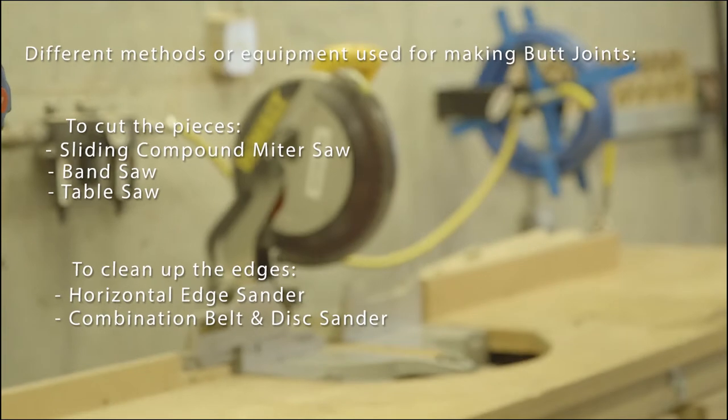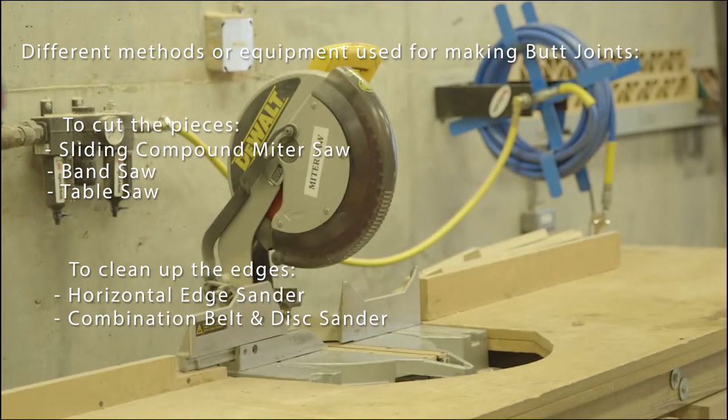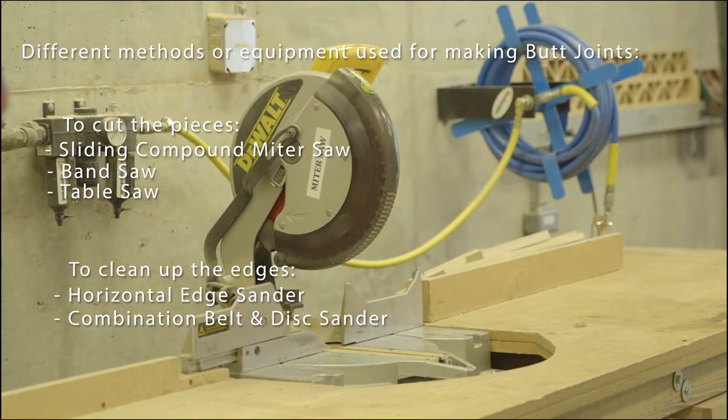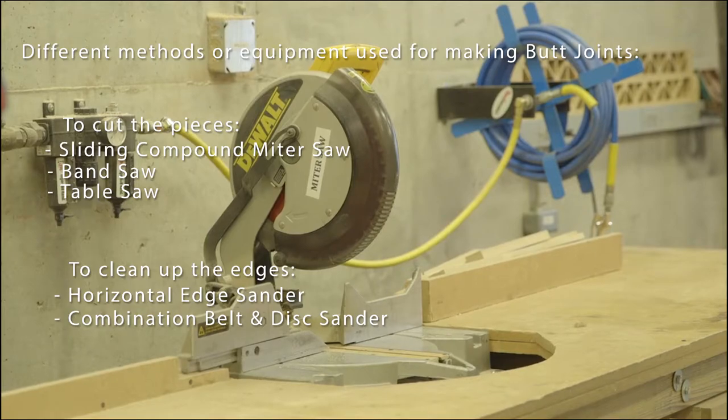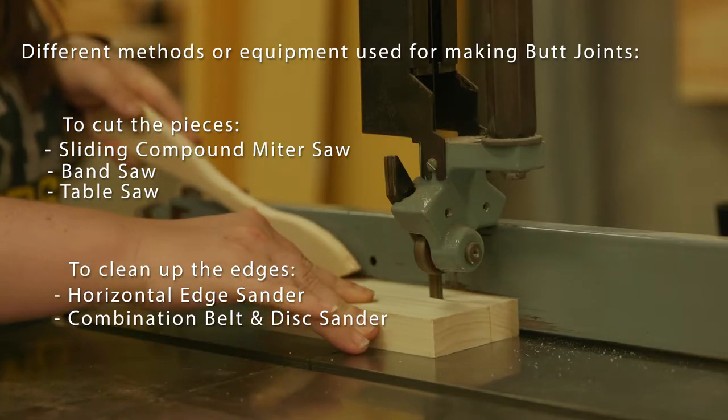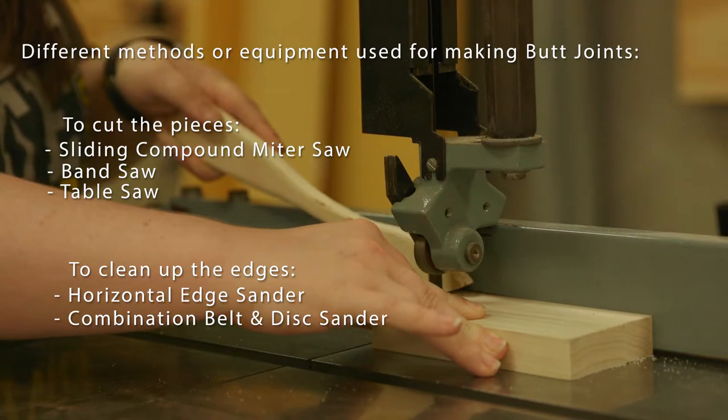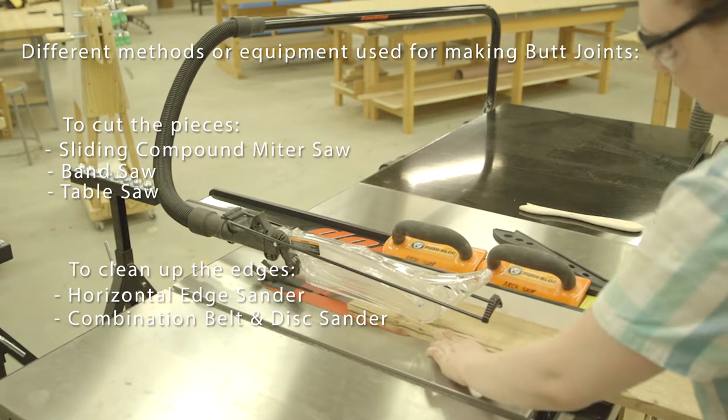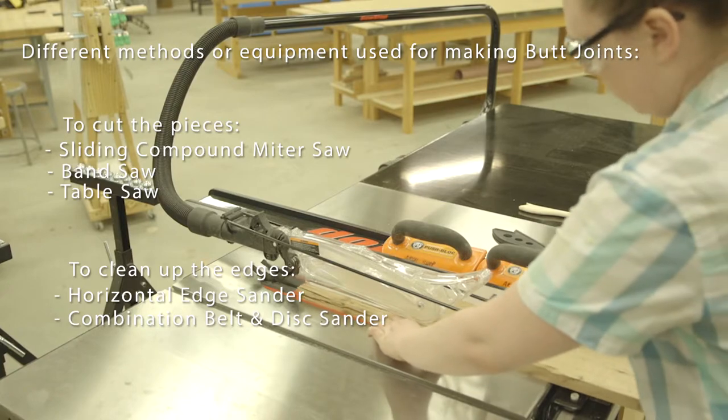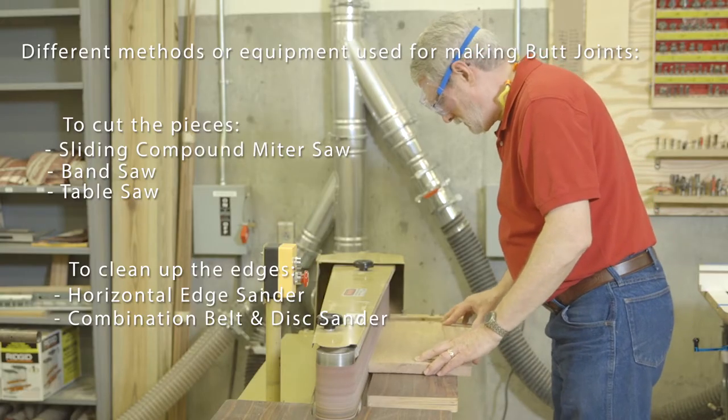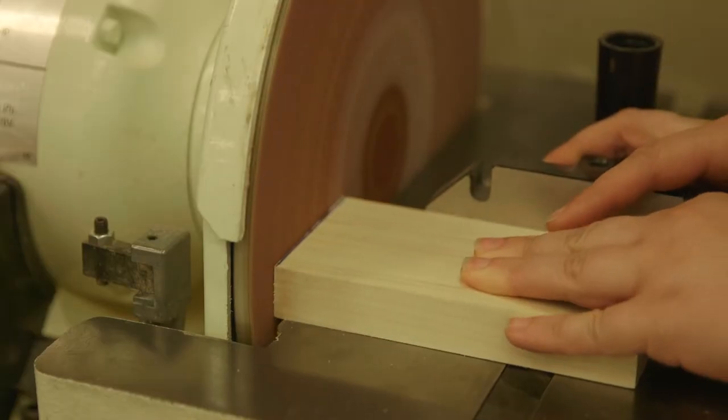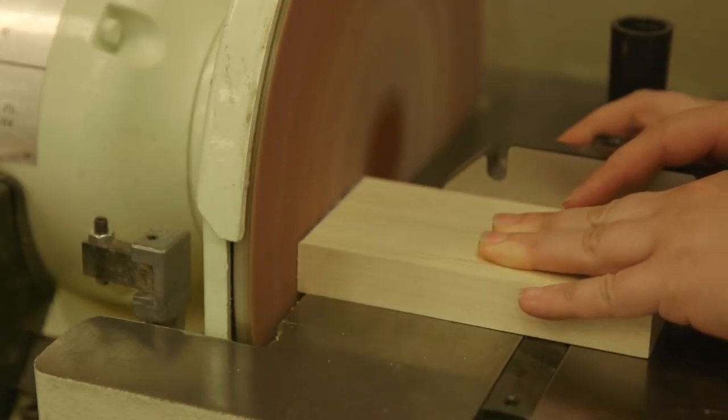The pieces for the butt joint can be cut and dressed using any of the following methods or pieces of equipment. To cut the pieces: the sliding compound miter saw, the band saw, the table saw with assistance from the shop staff. And then to clean up the edges, you can use the horizontal edge sander or the combination belt and disc sander.